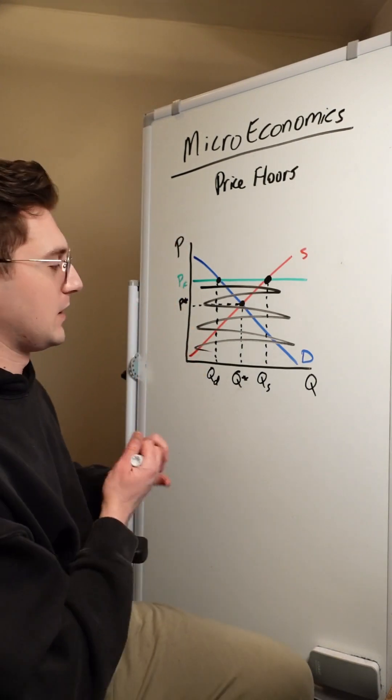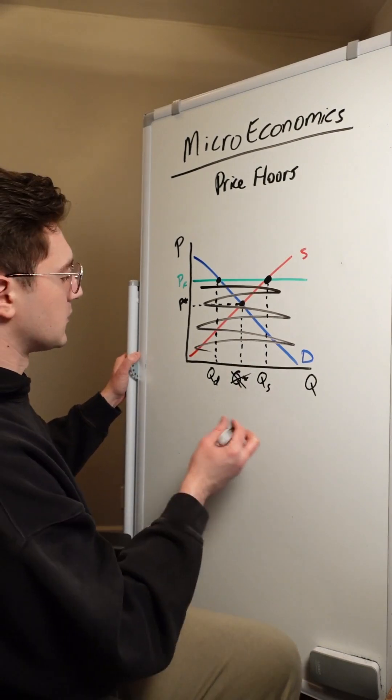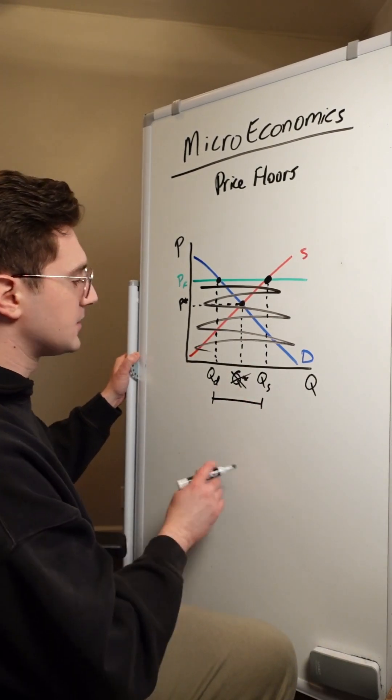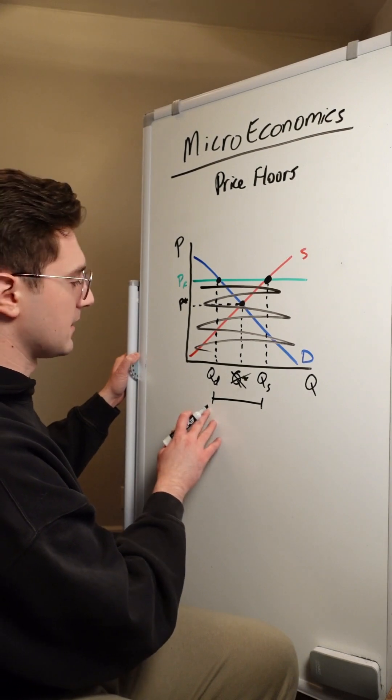So from here, we got to just completely ignore that old equilibrium quantity because all that matters now is this discrepancy between the quantity supplied and quantity demanded.